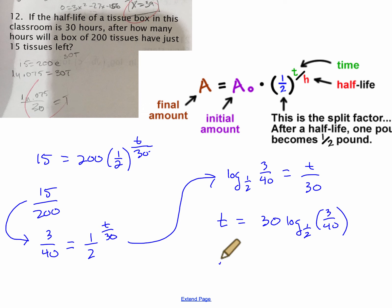And so that time is going to equal, boom, through the magic of video editing, we get 30 log base one-half of 3 over 40, which is approximately equal to 112.1089. So we would say about 112 hours.